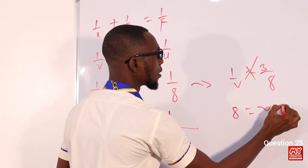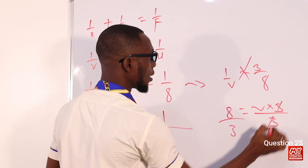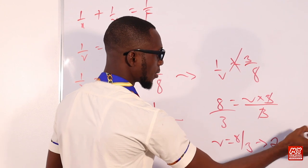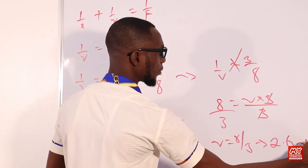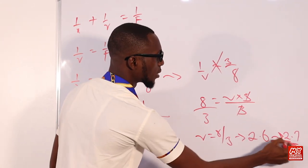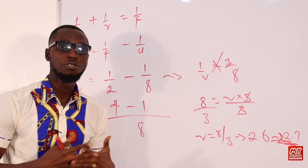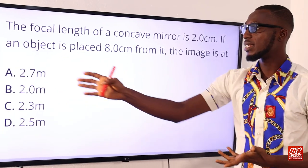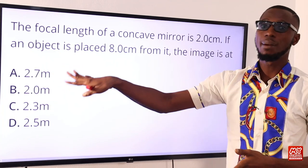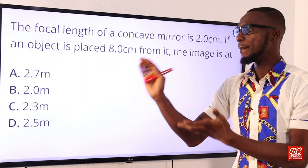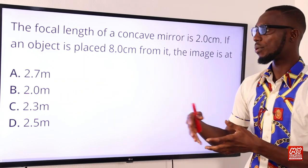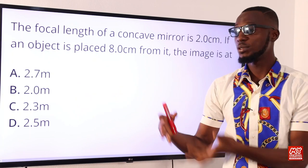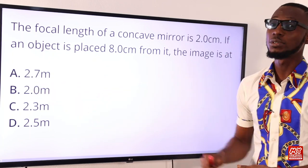From 1/v = 3/8, we get v = 8/3 ≈ 2.67, roughly 2.7 cm. The units should be centimeters since the given values were in centimeters. The correct value is 2.7 cm, so the correct option is option A.